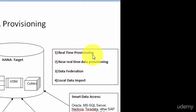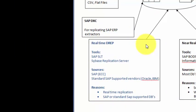First, let's take a look at real-time data provisioning. In the HANA solution we have two tools which allow you to get data in real-time, though they are not part of the native HANA solution. The first tool is SAP SLT, which stands for SAP Landscape Transformation, and the next tool is Sybase Replication Server. Both of these are replication tools — they copy data from the source system and post it to the target system with a latency of less than five seconds.